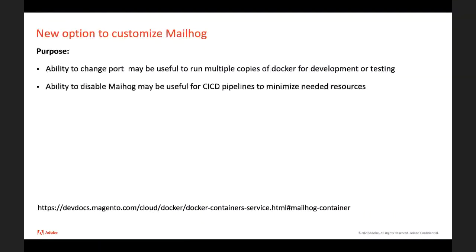In the previous release, we switched to Mailhog as the default mail service for Docker, and in this release we added flexibility and the ability to adjust the configuration of Mailhog. Right now you are able to change the port, which might be useful to run multiple copies of Docker for development or testing. We also added the ability to disable Mailhog, which might be useful for CI/CD pipelines when you need to minimize resources and don't need Mailhog.